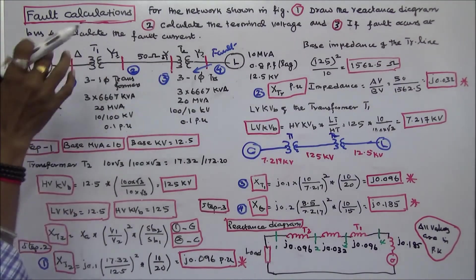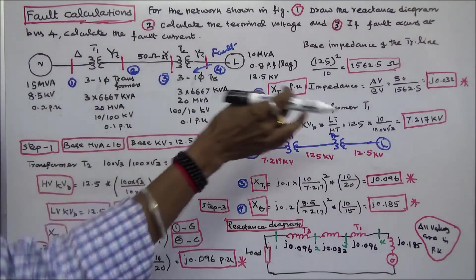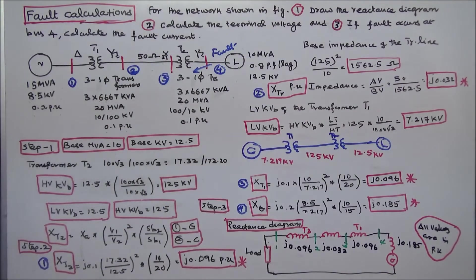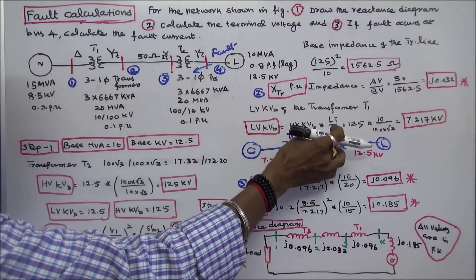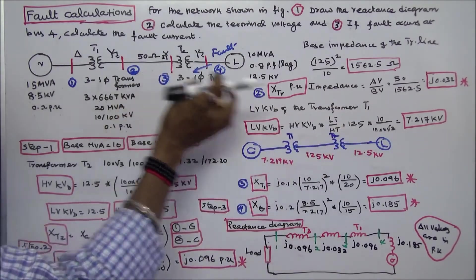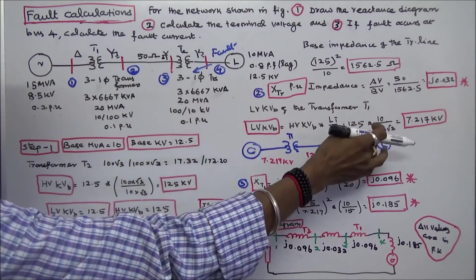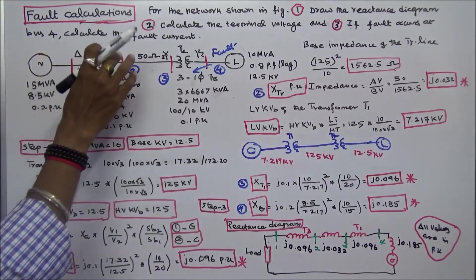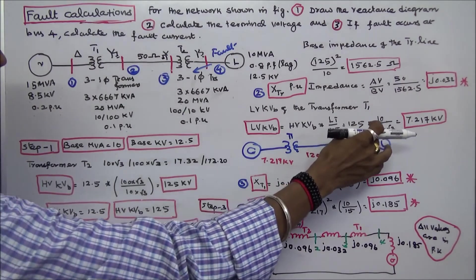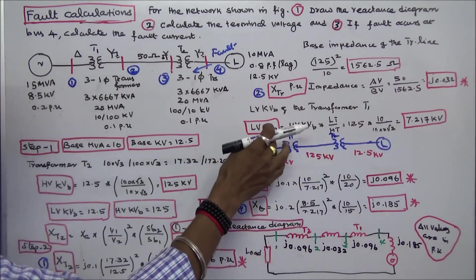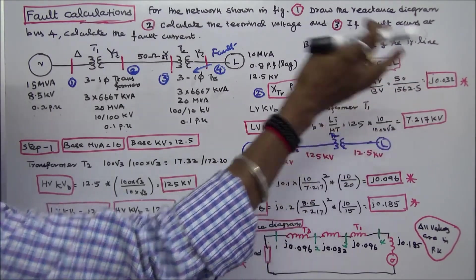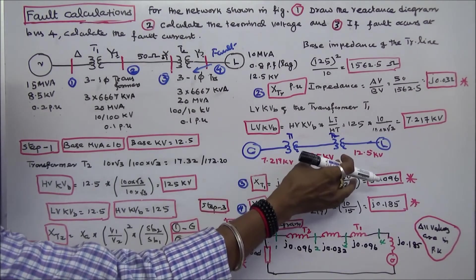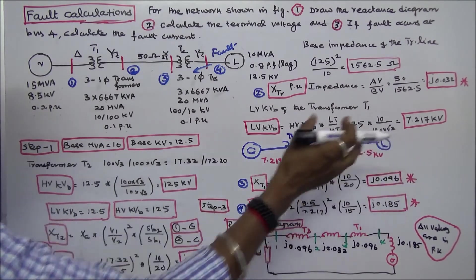Next I calculate the low voltage kV base of Transformer 1. Low voltage kV base equals high voltage kV base × (LT/HT). High voltage kV base is 125 kV; the HT side is star connected, so HT equals 100√3. The LT side is delta connected. Therefore, low voltage kV base equals 7.217 kV. So this side is 7.217 kV, the transmission side is 125 kV, and the load side is 12.5 kV.